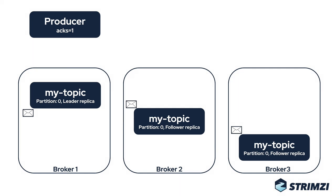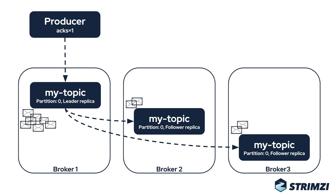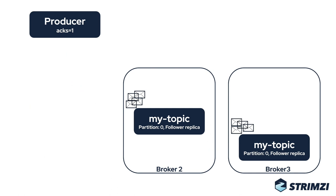It can easily happen that the producer is sending new messages to the leader, but the replicas do not manage to sync all the messages — for example, because the network is too slow or the other brokers have a lot of load from other topics. So suddenly, some of the messages might be only on the first broker where the replica leader is. And when something happens and you lose the broker, you might lose the messages as well, or you might need to wait for the broker to be back online to recover them.